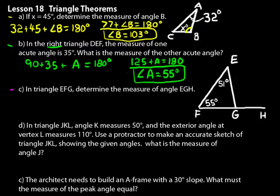Look at problem C. In triangle EFG, determine the measure of angle EGH. So we need to figure out this angle right here. Well, remember theorem 18-2? According to that theorem, EGH should be the sum of the exterior angles there. So angle EGH, that should just equal 51 plus 55. And that's easy enough to do in your head. 50 plus 50 would be 100. So adding 1 and 5 to that would be 106 degrees.